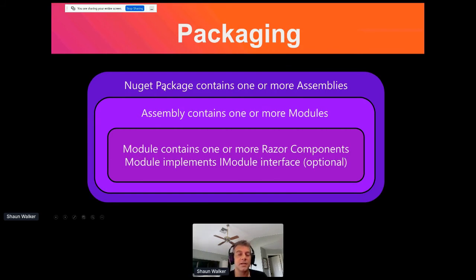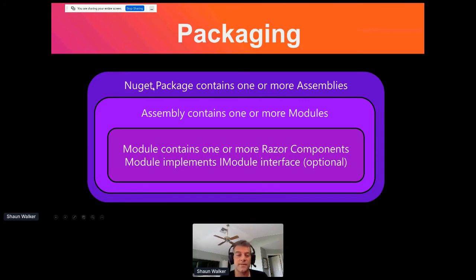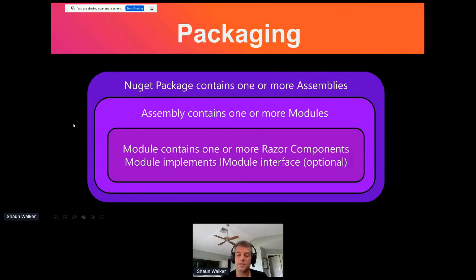Octane allows you to upload the NuGet package to NuGet.org and then download modules directly from NuGet.org into your Octane environment and install them directly. In the packaging area there are some subtle differences over the way it worked in DNN, but it's conceptually the same, so it's very familiar.